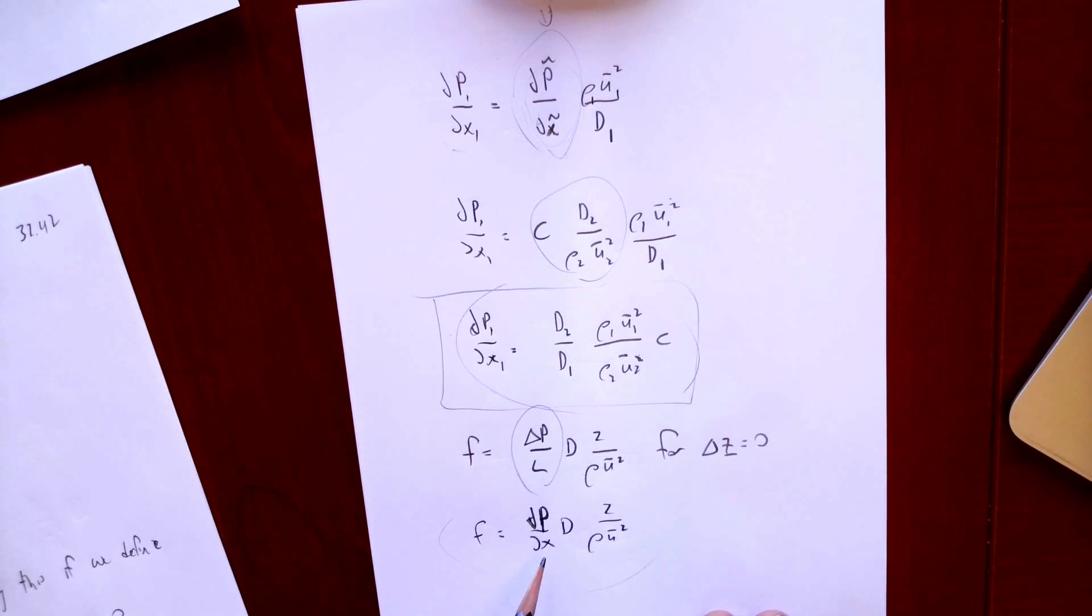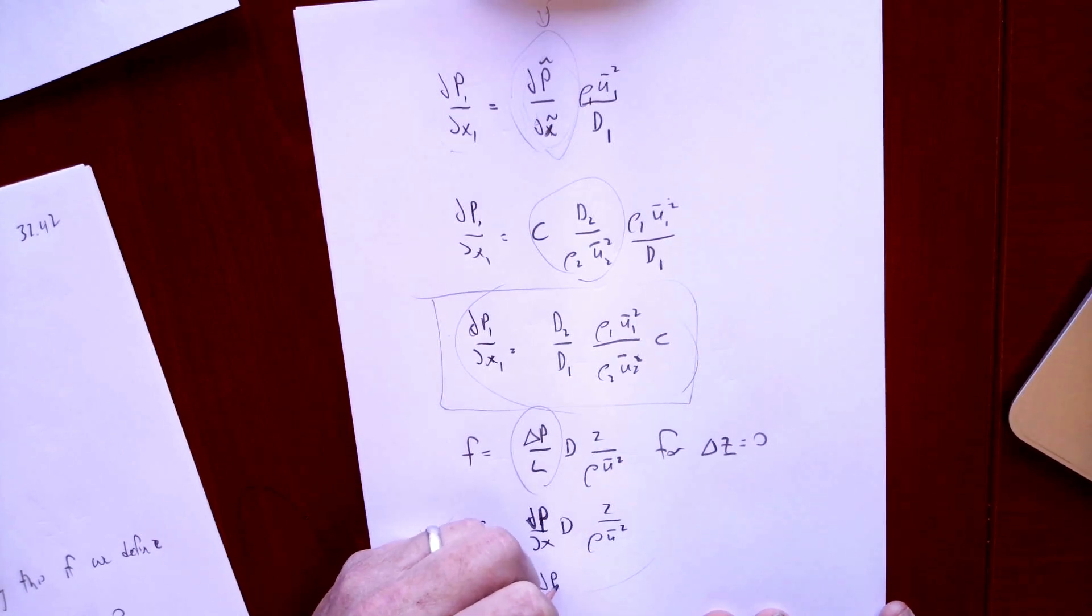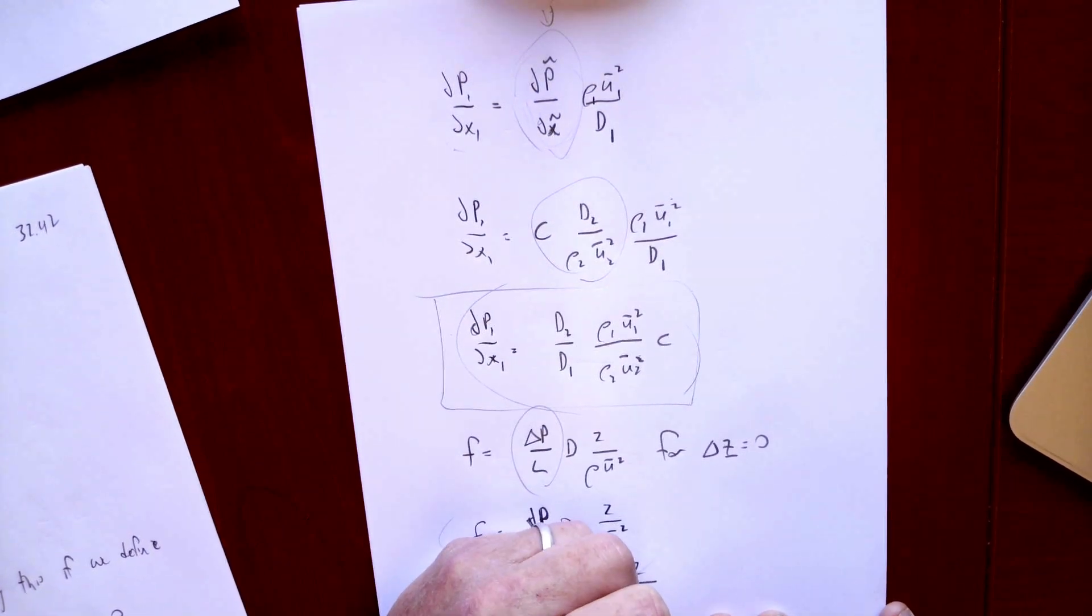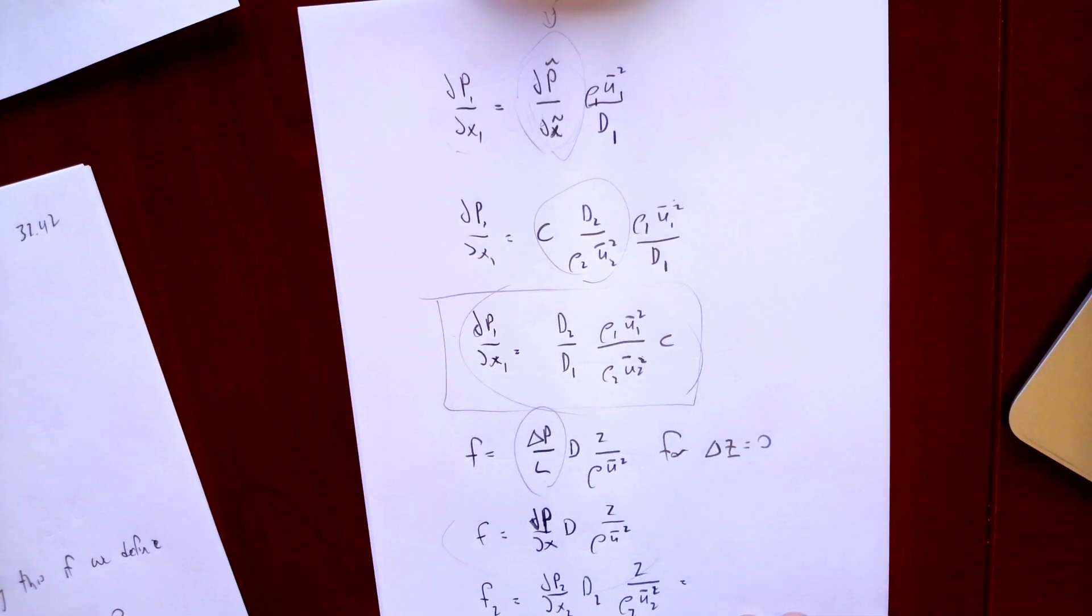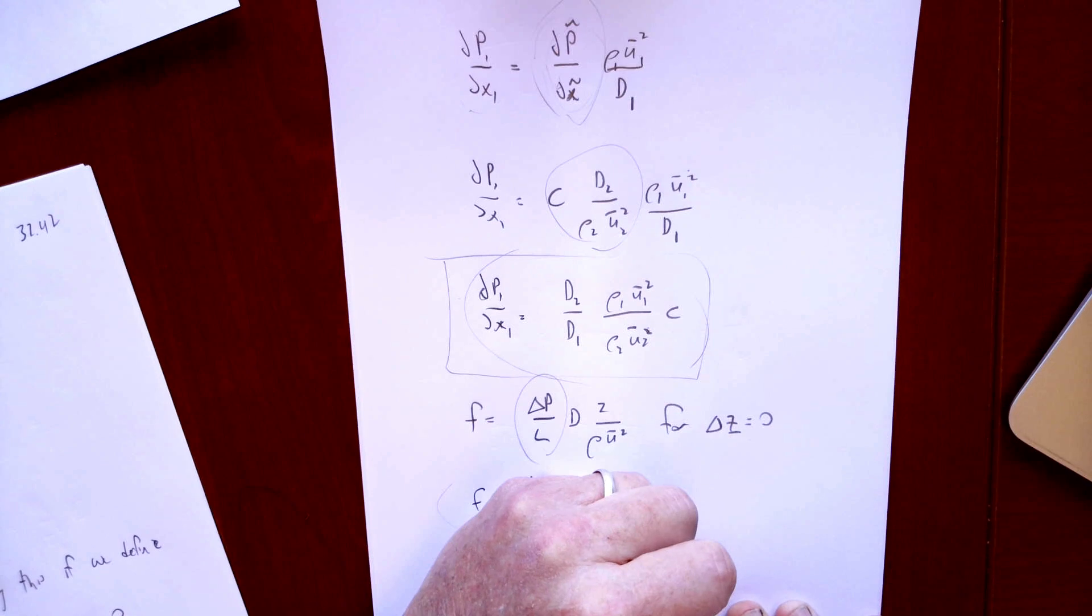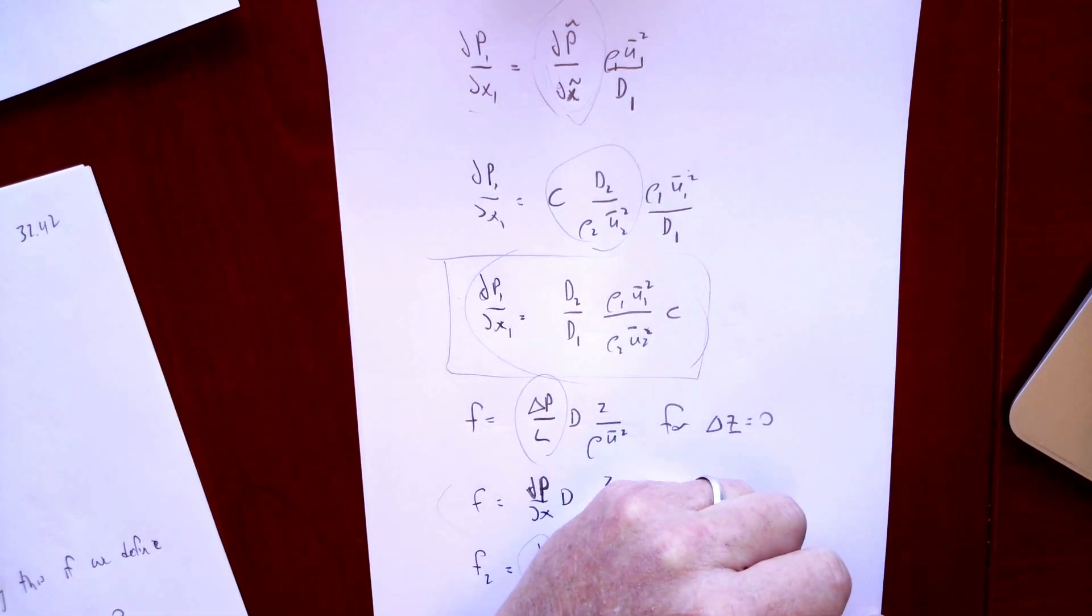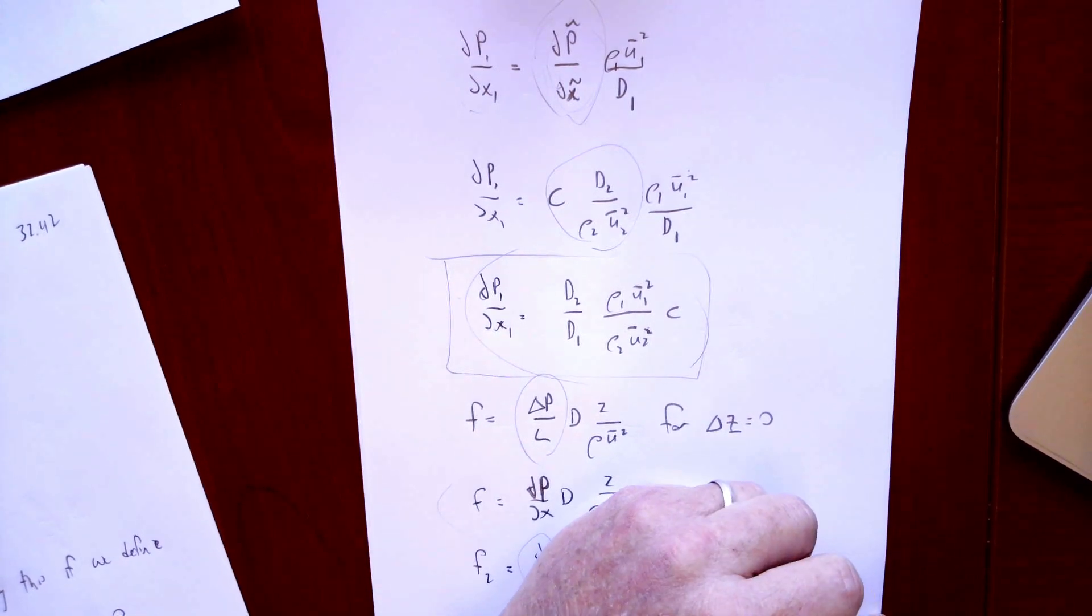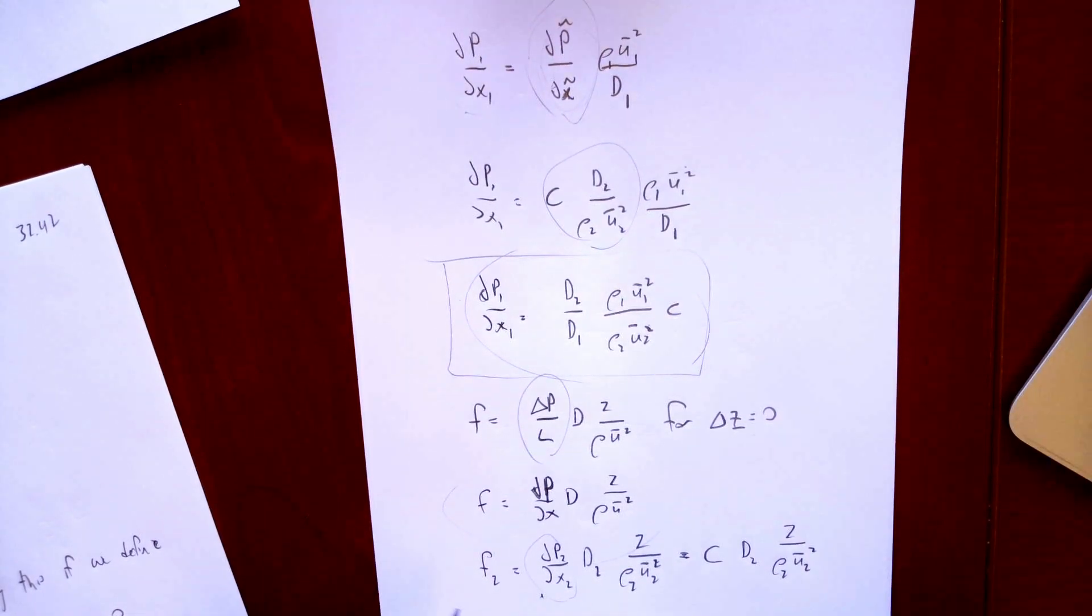So we can take that and now apply that to pipe 2, the one that we had experimental results for. f2 equals DP/DX2 times D2 times 2 over ρ2U2 squared. And of course, we know that's equal to, this grouping here is just C, because that's what we actually measured, so that's our C constant times D2 times 2 over ρ2U2 squared.